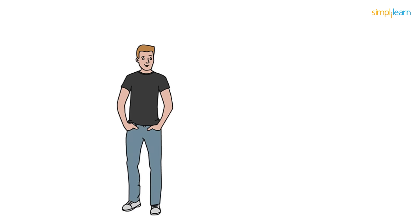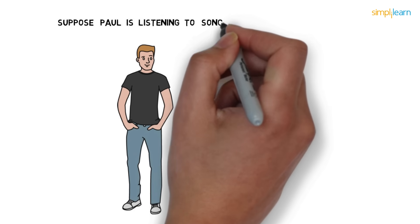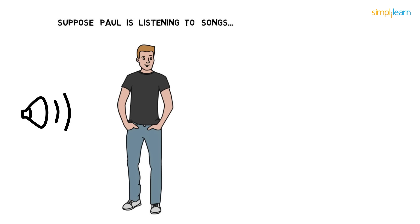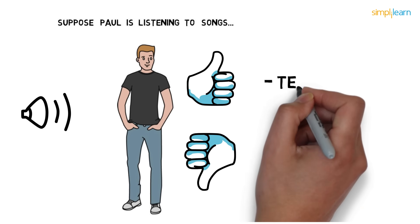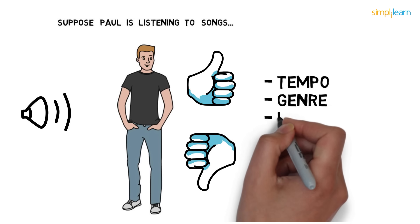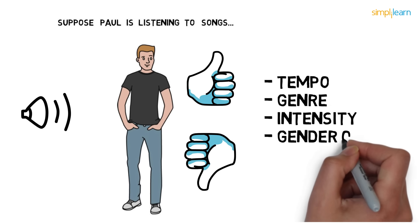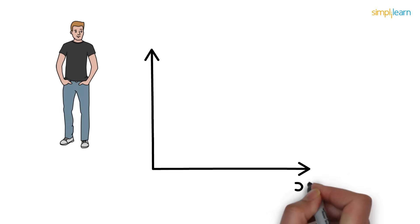So that's Paul. He loves listening to new songs. He either likes them or dislikes them. Paul decides this on the basis of the song's tempo, genre, intensity, and the gender of voice. For simplicity, let's just use tempo and intensity for now.